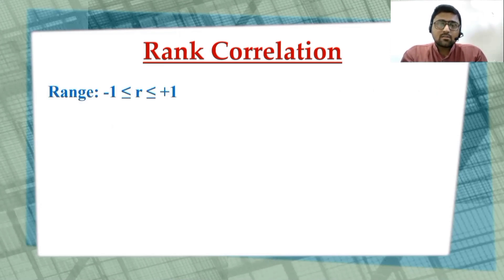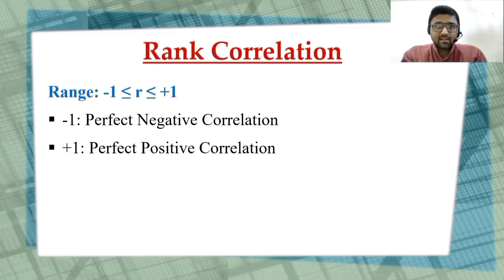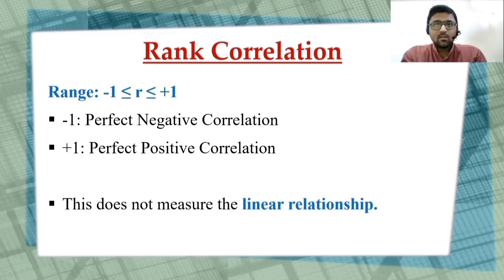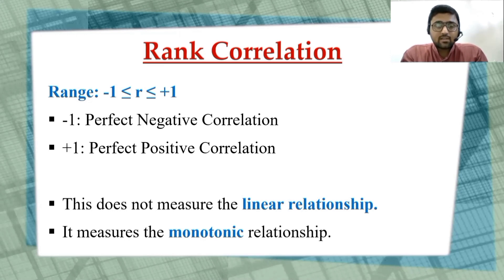The range of rank correlation is between minus one and plus one. Minus one shows perfect negative correlation and plus one shows perfect positive correlation. Importantly, rank correlation does not measure only the linear relationship — it measures the monotonic relationship. Pearson's correlation coefficient measures the linear relationship only, whereas rank correlation analysis measures the monotonic relationship.